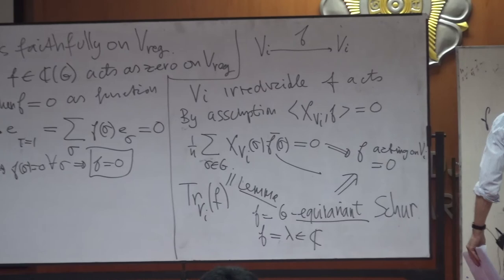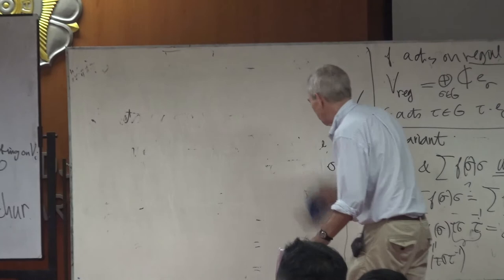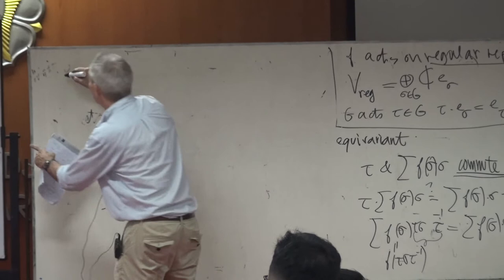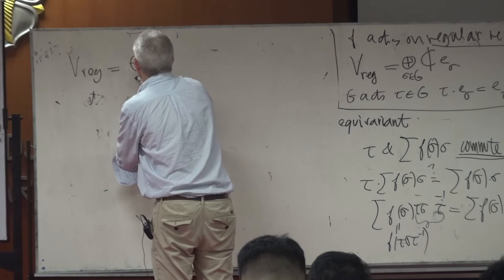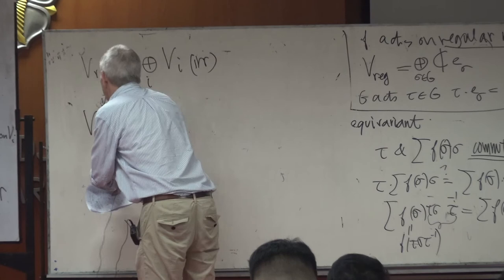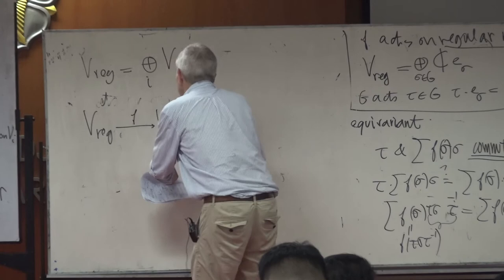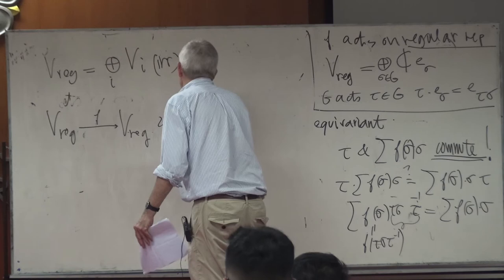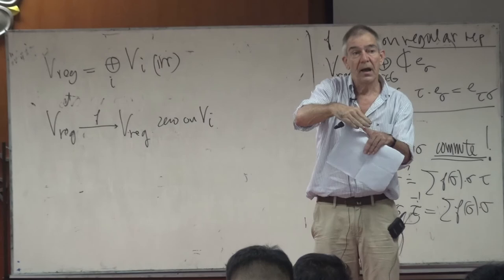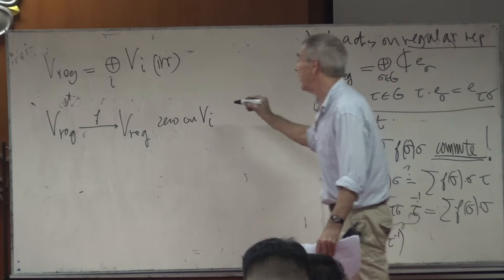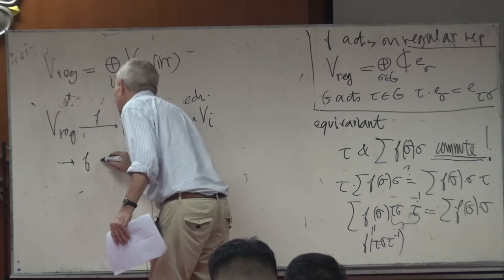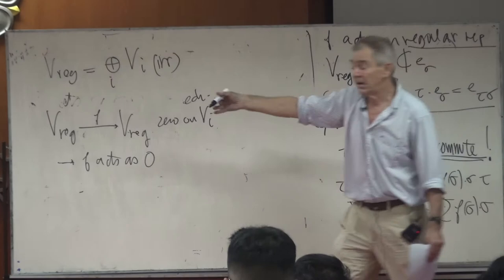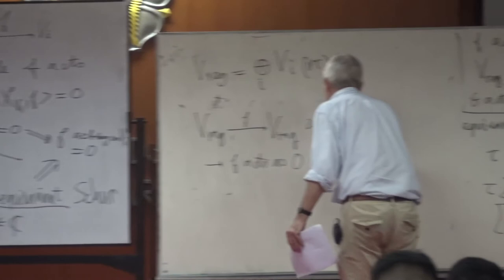Now I'm done, because the regular representation is the sum of irreducible representations. I act with F on the regular representation, going from V_reg to V_reg. F acts on each irreducible component. It is zero on each V_i — you cannot go between different V_i's because of Schur's lemma, and if you go to V_i itself, it is also zero. So F acts as zero on V_reg. Since the action is faithful, the only element that can act as zero is zero itself. The conclusion is F equals zero. That completes the proof of Theorem 4: you cannot have elements orthogonal to all the characters, because then they act as zero everywhere.